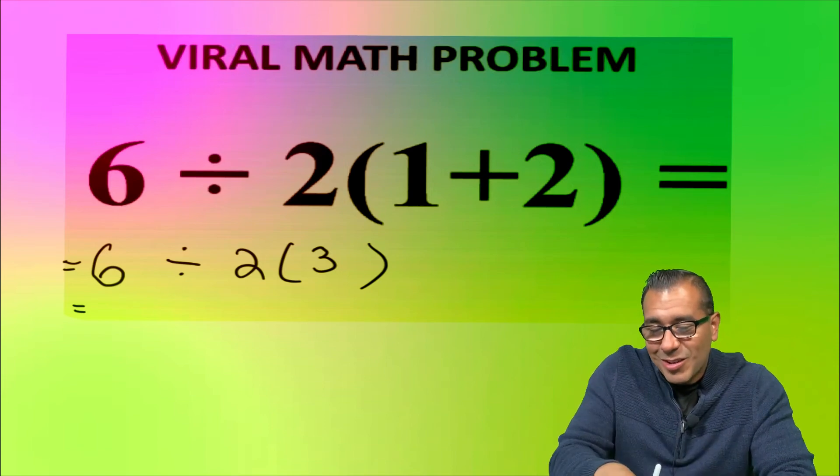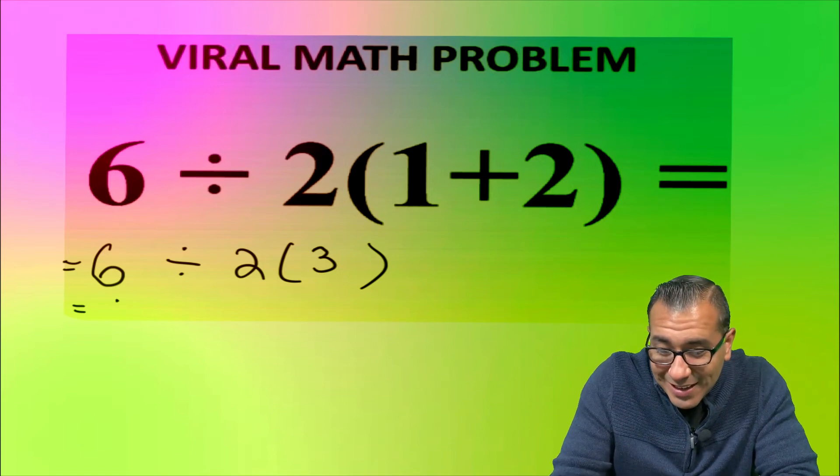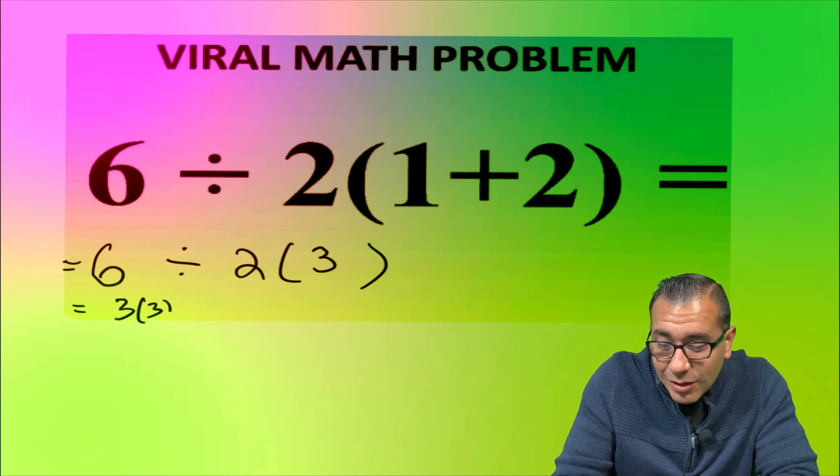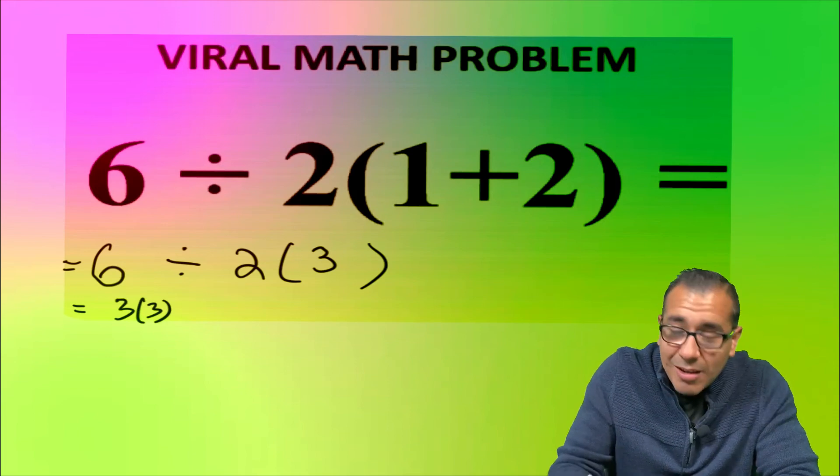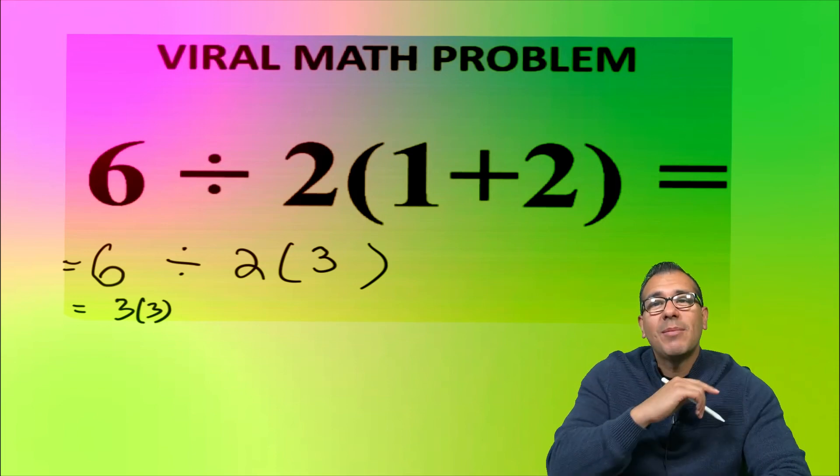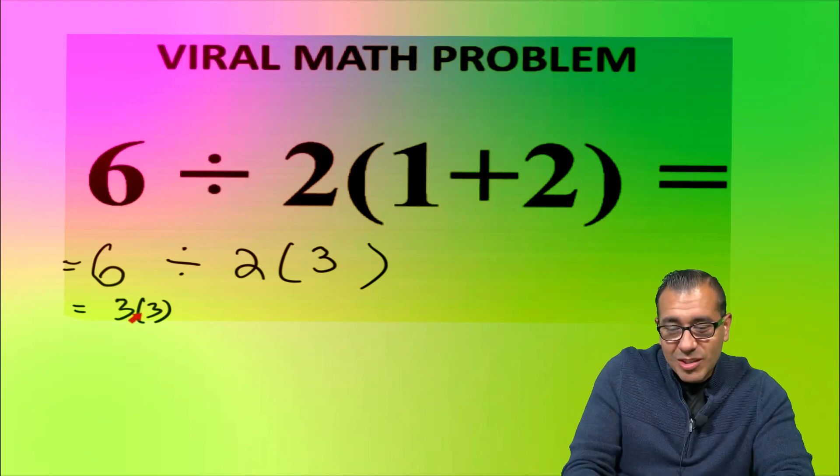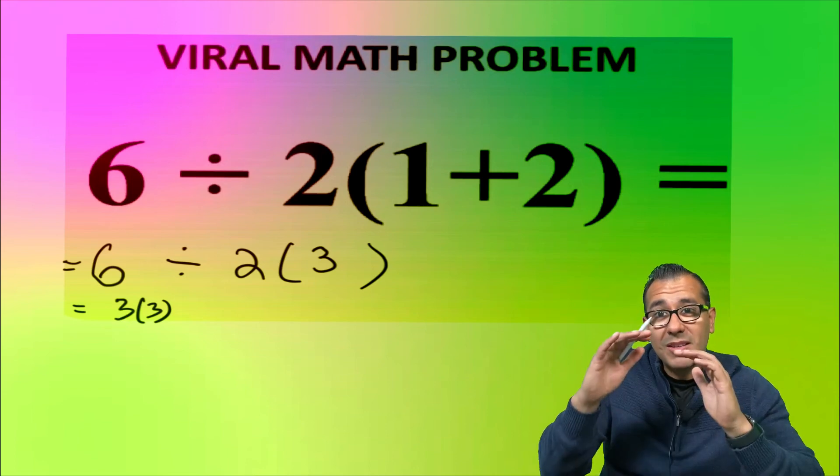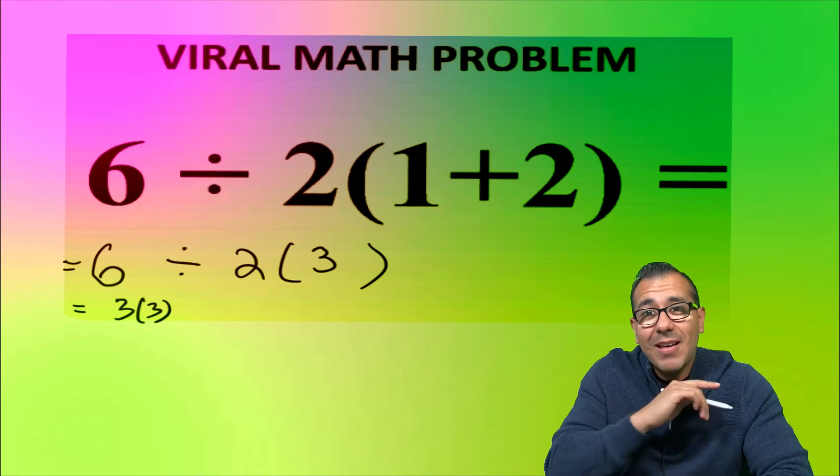So six divided by two, that gives us three. And then that three that's in parentheses, it just comes down—you drop it like it's hot, it comes along for the ride. Now we're just left with the straight-up multiplication, because when you have those parentheses, all that means is to multiply. So we go ahead and multiply and you get nine.